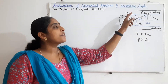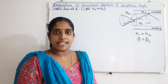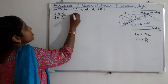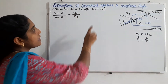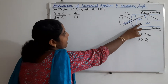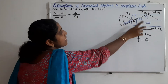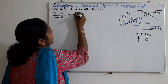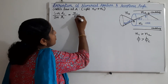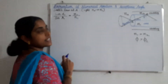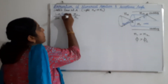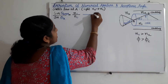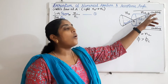First, we apply Snell's law at point A. At point A, light is travelling from the surroundings with refractive index N0 into the core with refractive index N1. Snell's law gives N0 sine theta A maximum equals N1 sine theta R. The angle of incidence at point A is theta A maximum and the angle of refraction is theta R. Let this be equation number 1.